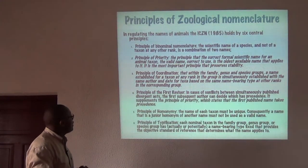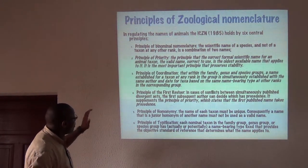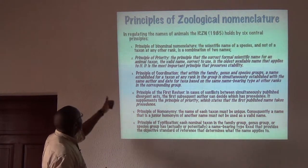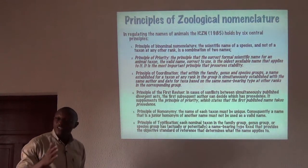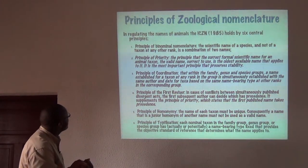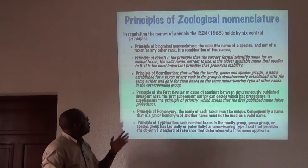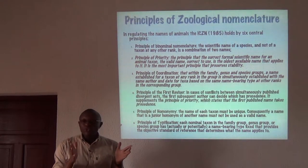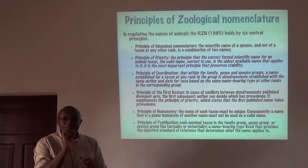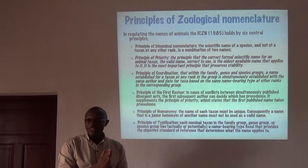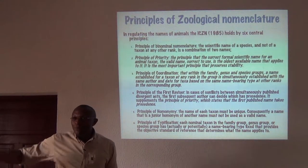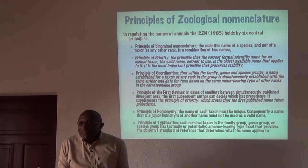The principles of zoological nomenclature include: first, the principle of binominal nomenclature — all valid names must be made up of two words, a genus name and a species name. Second, the principle of priority — if two names are published, the valid and official name is the one that was first validly published. For example, a name may first appear in an obscure journal that few people see, but it still has priority over a later name published in a prominent journal.